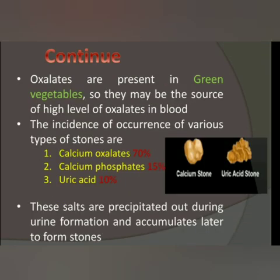Oxalates are basically present in green vegetables, so they may be the source of high oxalate levels in the blood. If someone has kidney stones, the recommendation is often to avoid certain foods during treatment — green vegetables like spinach contain high amounts of oxalates, and eating them can cause stones to grow. Tomatoes also have high oxalate content. Regarding incidence of various types of stones: calcium oxalate accounts for 70% of cases, calcium phosphate 15%, and uric acid 10%. Uric acid is present in the blood, but if its level is too high and not excreted, uric acid stones can form in the kidney.